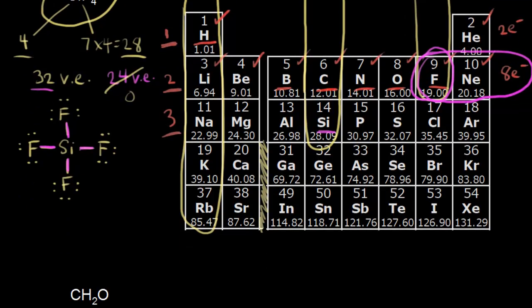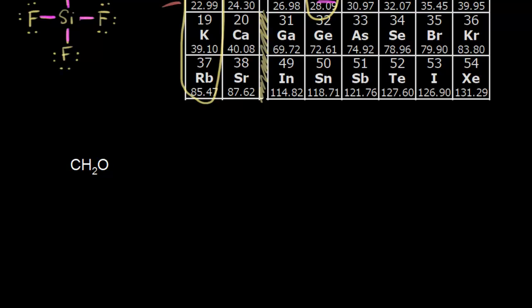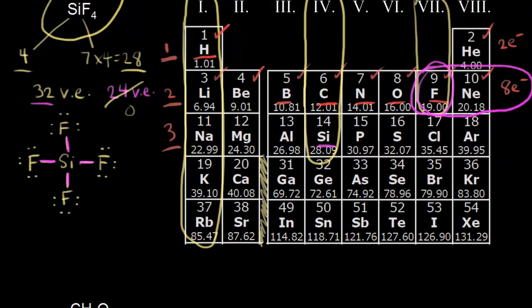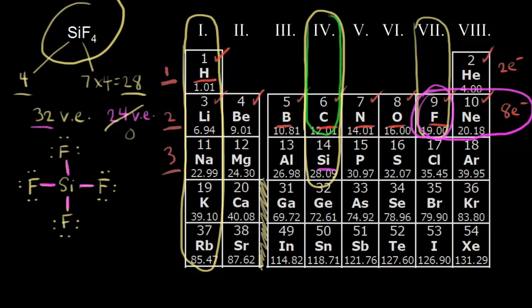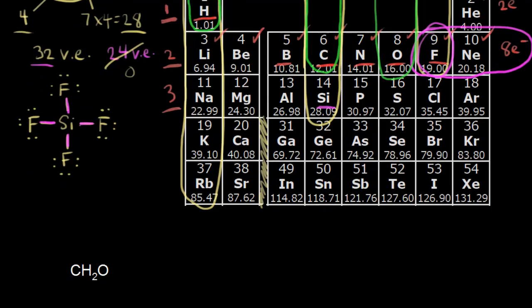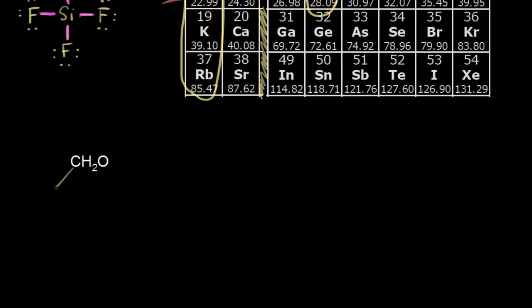Let's look at another example: CH2O, which is the molecular formula for formaldehyde. Following our guidelines, the first thing is to find the valence electrons. Carbon is in group four — four valence electrons. Hydrogen is in group one — one valence electron. Oxygen is in group six — six valence electrons. So: one carbon gives four, two hydrogens give two, and one oxygen gives six. Six plus four plus two equals 12 valence electrons total to represent in our dot structure.